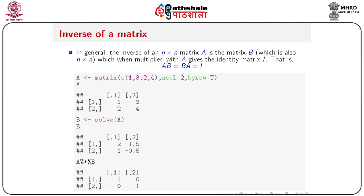To get the inverse of the matrix, there is a function called solve(). The solve function is developed primarily for solving linear equations so it normally takes two arguments, but if you omit the second argument it generates the inverse of the matrix. The first argument should be a square matrix. Assign b equals solve(A), and to verify, compute A %*% b — it should give you the identity matrix.